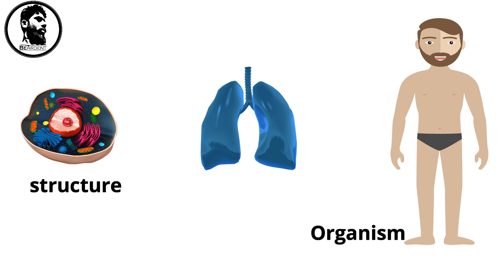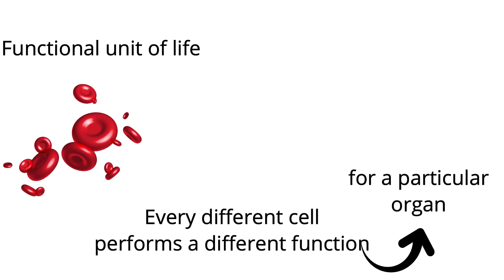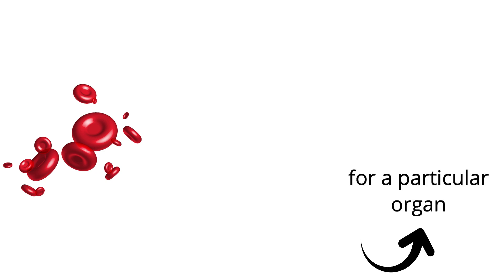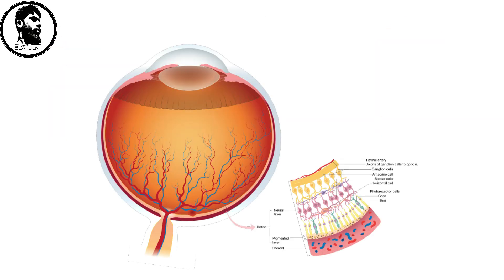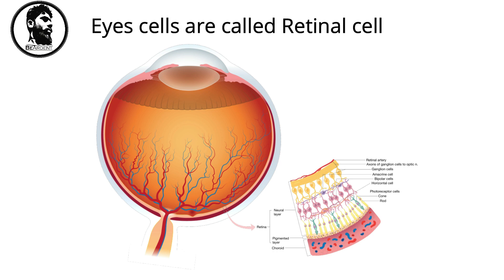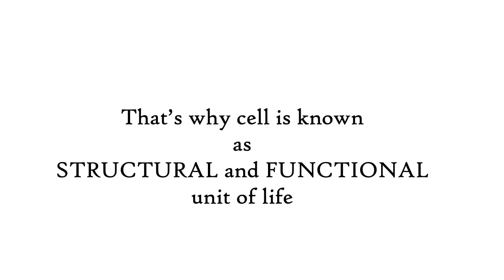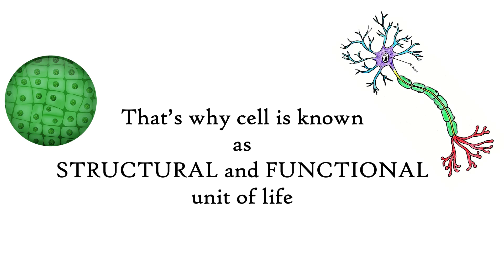Like this cells are called as functional unit of life because every different cell performs a different function for a particular organ. Example, we can't see by our nose or ears. Why? Because eye cells are having a function of vision that nose cells and ear cells do not have. That's why cell is known as a structural and functional unit of life.